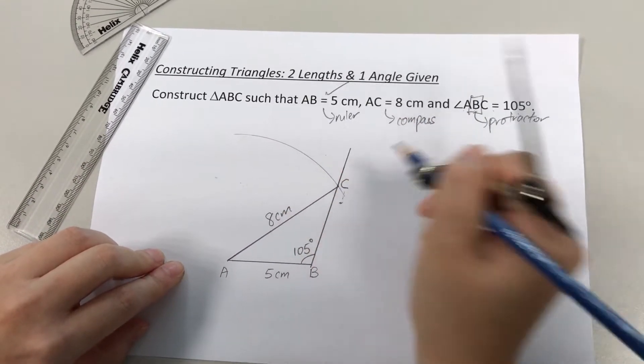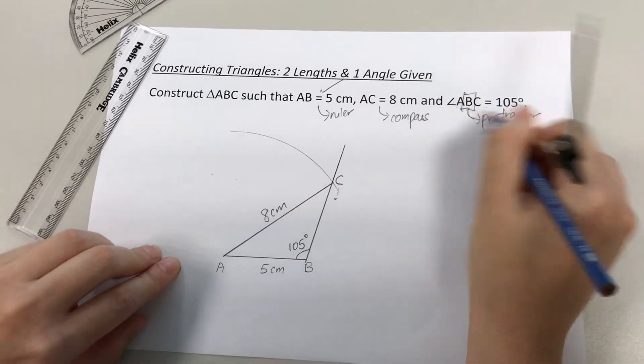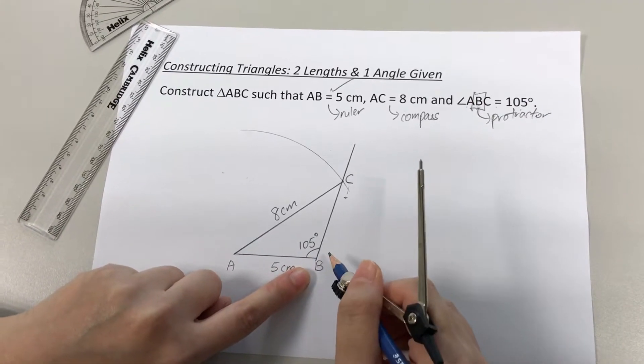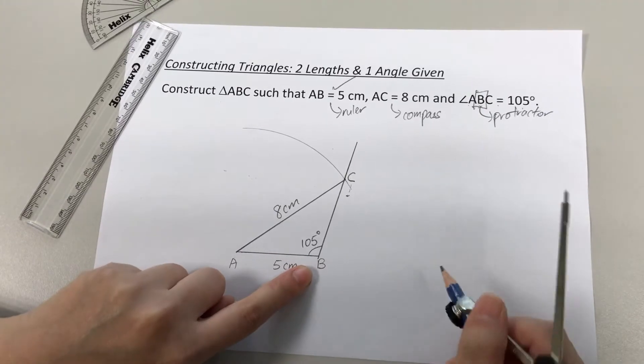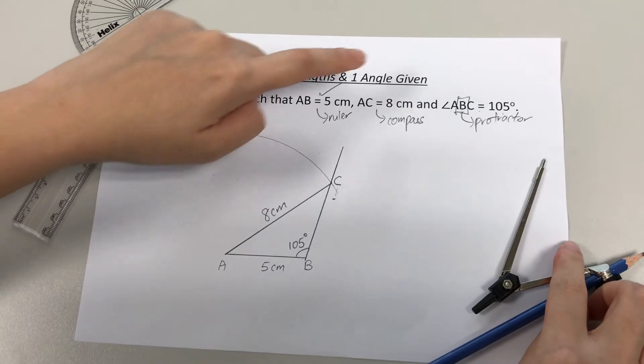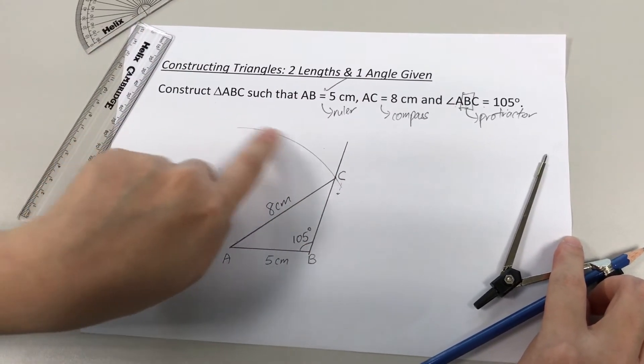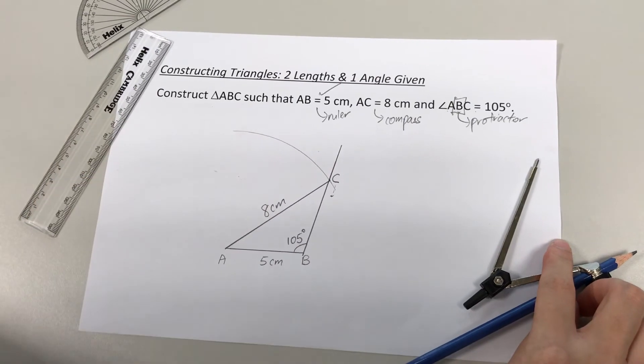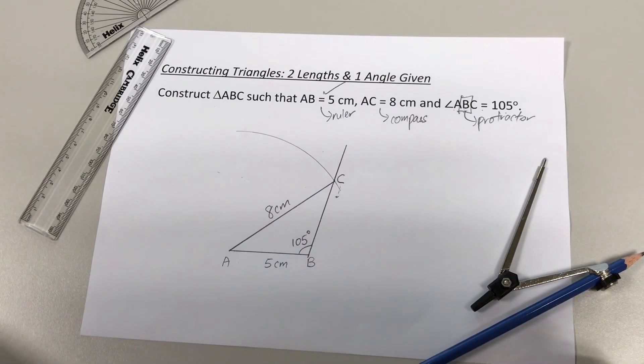I'm going to place 8cm here, as well as my angle B, which is 105 degrees, which I've already labeled. So with that, I would have completed drawing the triangle, given two lengths and one angle. Be sure that you do not erase this curve or any other curves that you have drawn using your compass. Thank you.